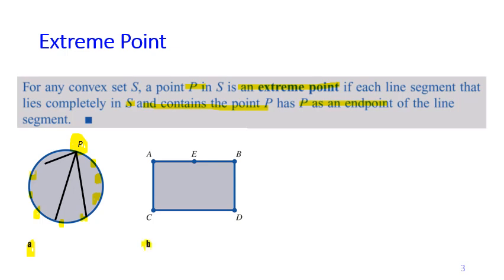For the rectangle, let's take a look at point A, which we call point P. We have lines that contain this point and we see that point P is always the endpoint of each line, that's why we call it an extreme point. That is not the case for point E — we have the line AB, but E is not the endpoint. Therefore E is not an extreme point, because we can find at least one line that contains E where E is not the endpoint.